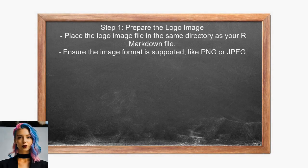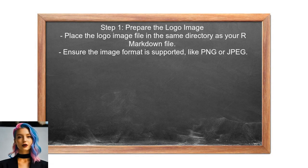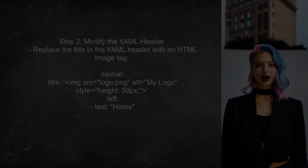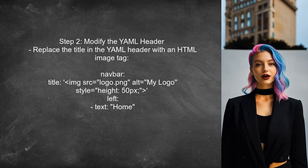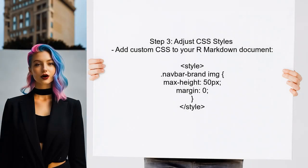To add a custom logo in the navbar title field of an R Markdown document, first ensure that the logo image is accessible by placing the image file in the same directory as the R Markdown file. Next, modify the YAML header of your R Markdown document by replacing the title text with an HTML image tag that points to your logo file. After updating the YAML header, adjust the CSS styles to ensure the logo fits well within the navbar.